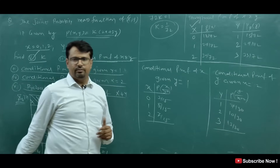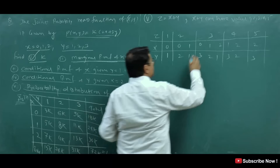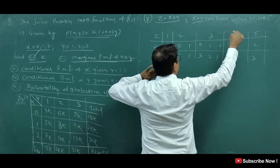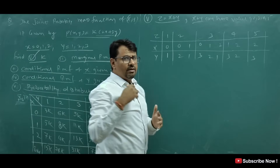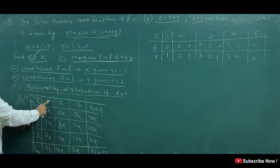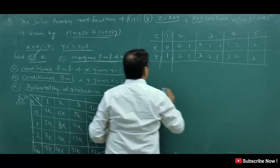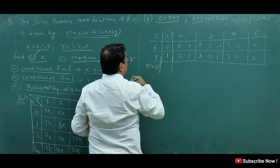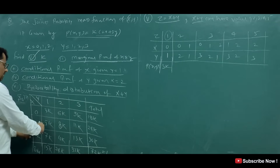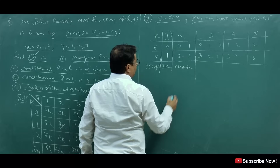Let Z equal X plus Y. The minimum sum is 0+1=1, and maximum sum is 2+3=5. So Z can take values 1, 2, 3, 4, 5. For Z=1: only case is X=0, Y=1, giving 3K. For Z=2: cases are X=0, Y=2 giving 6K, and X=1, Y=1 giving 5K, total 11K. For Z=3: cases are X=0, Y=3 giving 9K; X=1, Y=2 giving 8K; X=2, Y=1 giving 7K; total 24K.